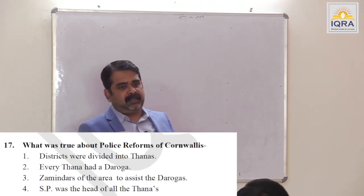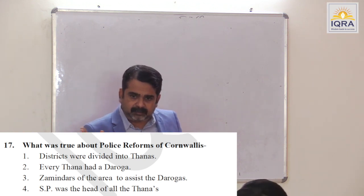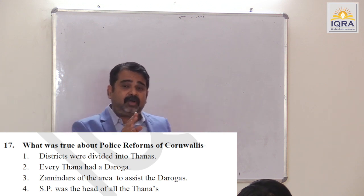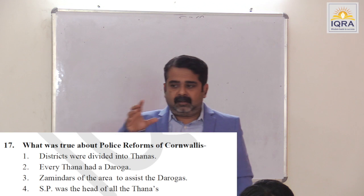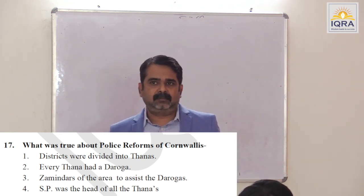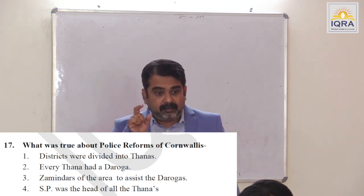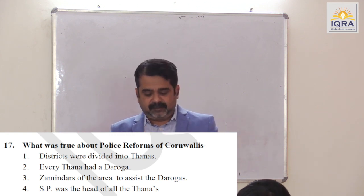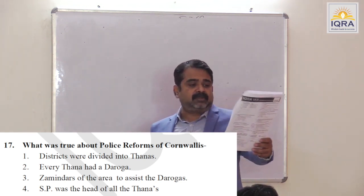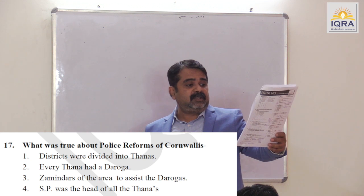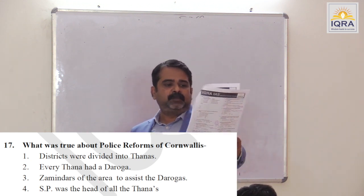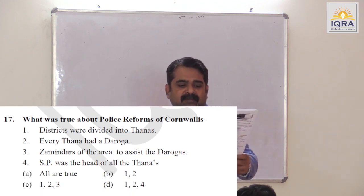What was true about police reforms of Cornwallis? Before Cornwallis, law and order was in the hands of zamindars. But when you have to exploit, you cannot rely on others. So he created a modern police service — he is the father of modern police service in India. Districts were divided into thanas — true. Every thana had a daroga — true. Zamindars of the area to assess the darogas — false. SP was the head of the thana — true. Statements 1, 2, and 4 are correct. Answer is D.